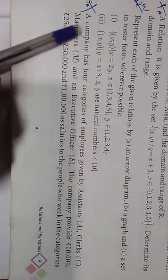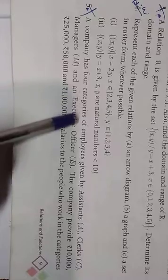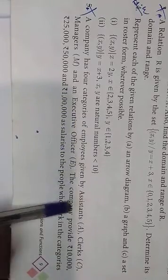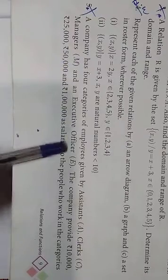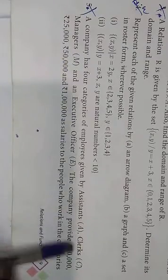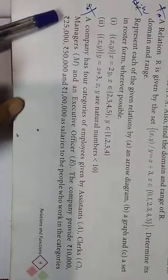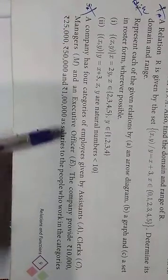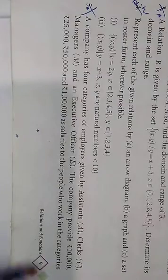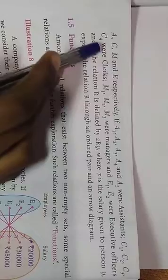A company has 4 categories of employees given by assistant, clerks, managers and an executive officer. The company provides 10,000 rupees, rupees 25,000, rupees 50,000 and rupees 1 lakh as salaries to the people who work in the categories A, C, M and E respectively.